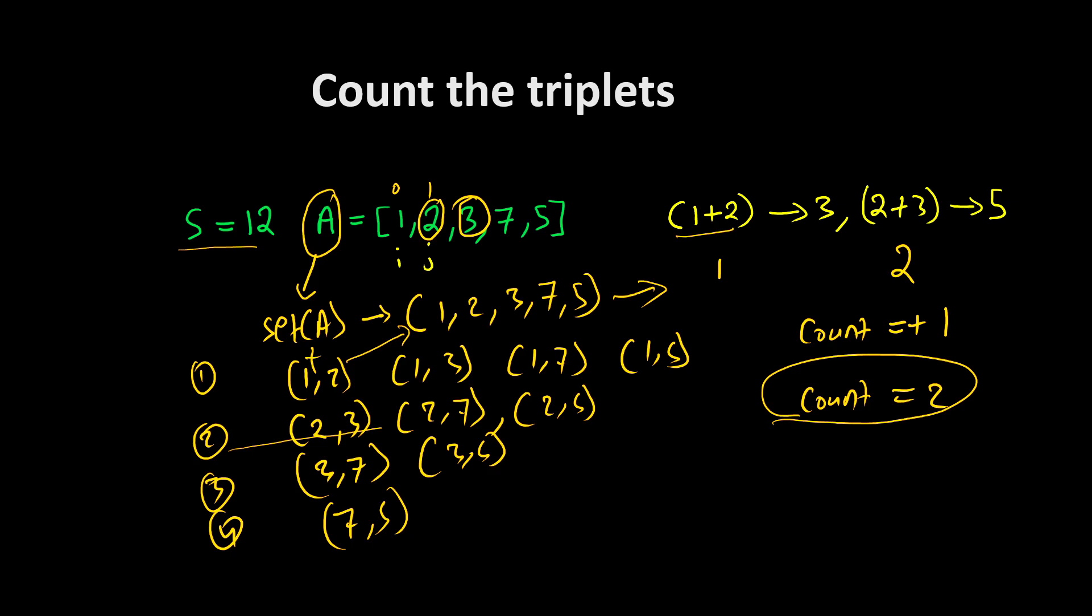Then just take all the possible combinations. We are taking two nested loops here and iterating all the possible combinations. We will be checking if that sum is existing inside the set variable or not. If it is existing, then we will update the count value. In the final, we have returned to the function. I hope you heard about the counter triplets problem.